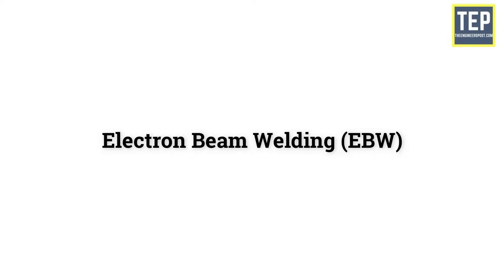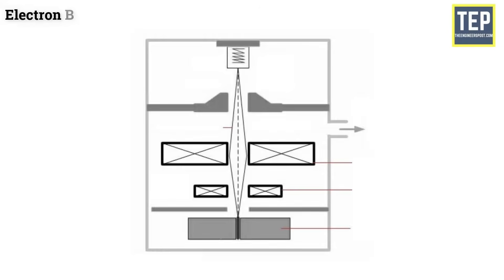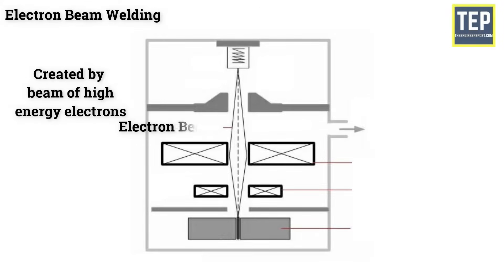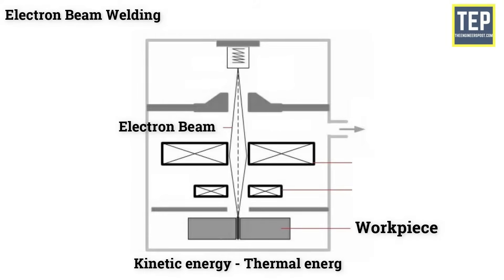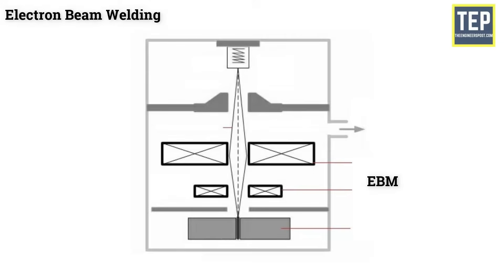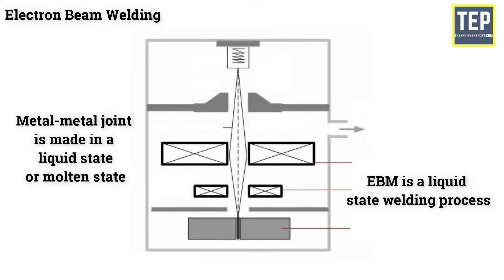Electron beam welding is a welding process that applies the heat created by a beam of high-energy electrons. The electrons hit the workpiece and their kinetic energy is converted into thermal energy, heating the metal so that the edges of the workpiece can be connected and a weld is formed after freezing. Electron beam welding is also a liquid state welding process in which the metal-to-metal joint is made in a liquid or molten state.